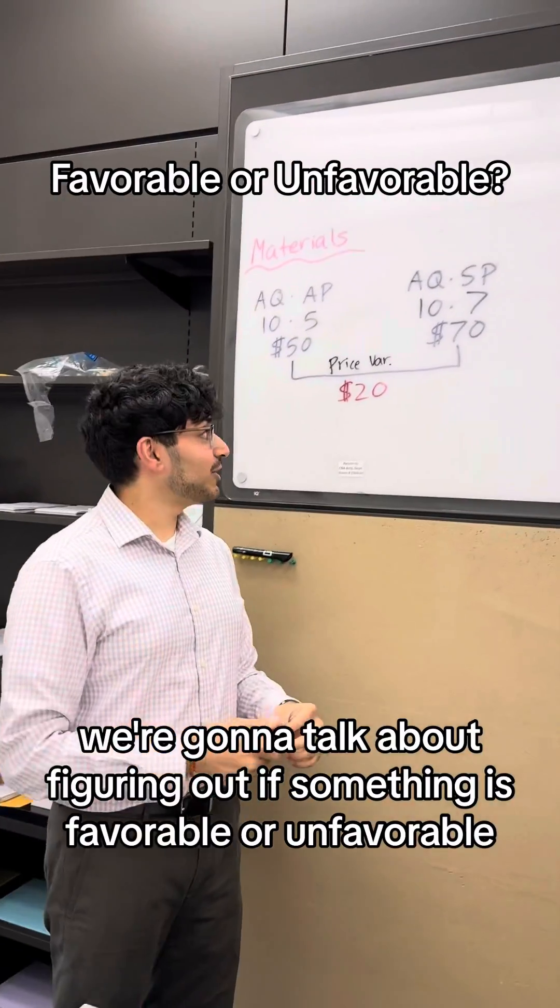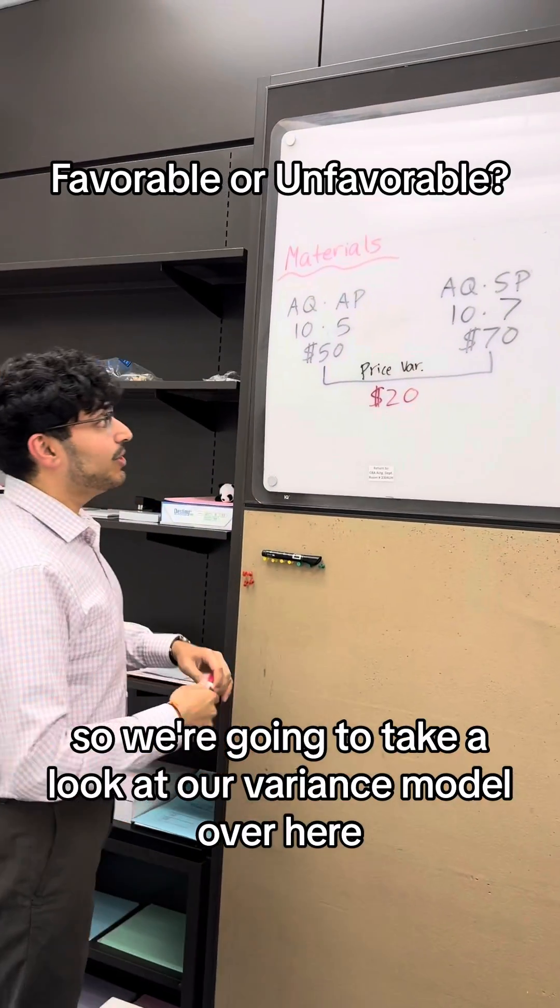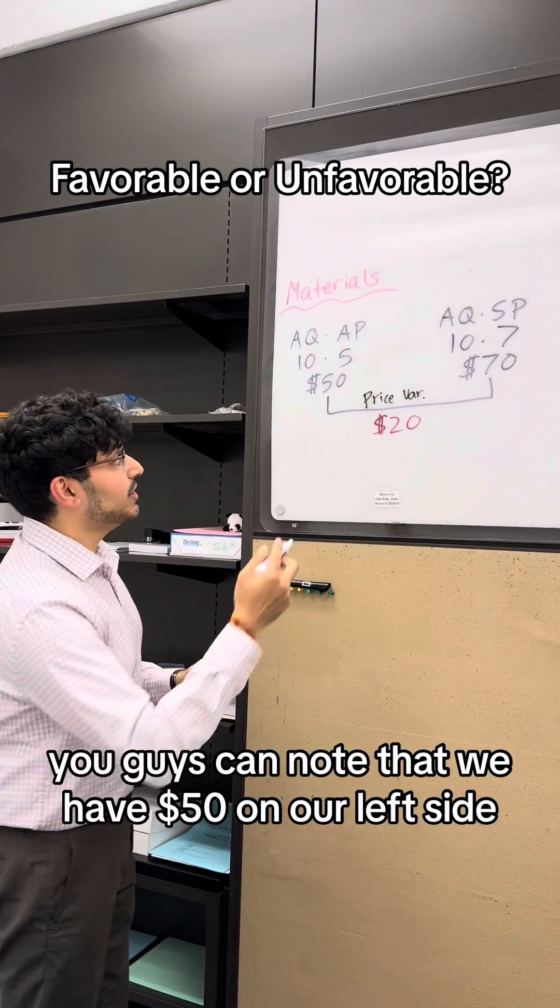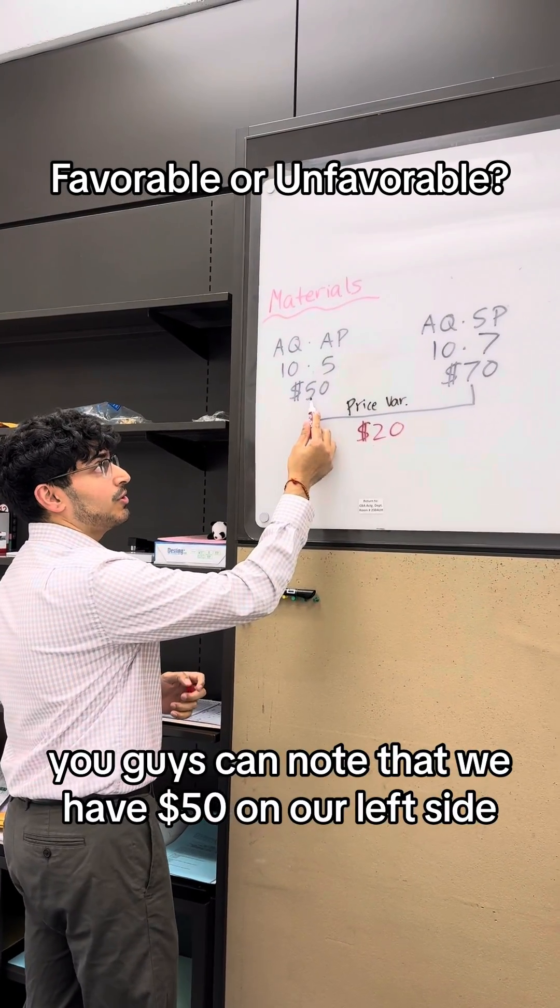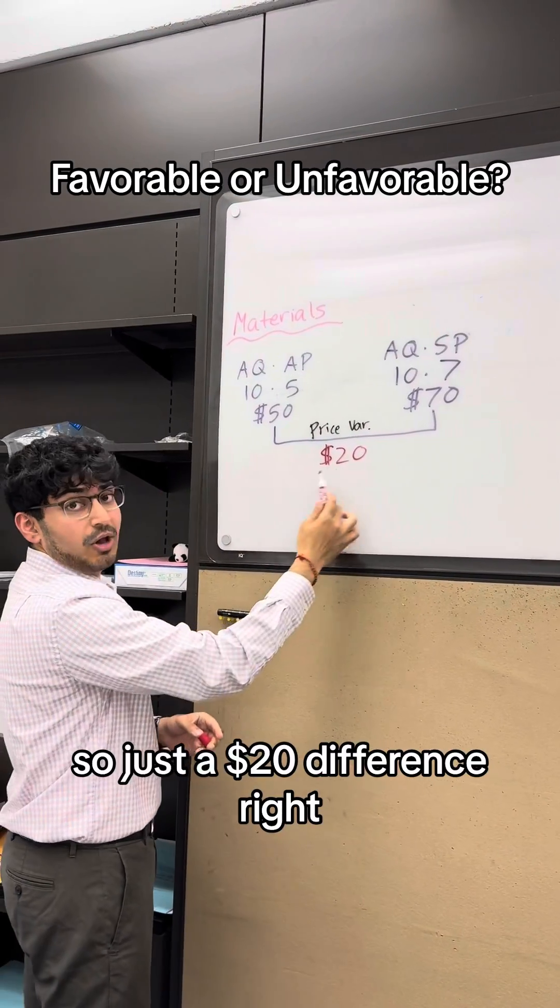So today we're going to talk about figuring out if something is favorable or unfavorable. So we're going to take a look at our variance model over here. You guys can note that we have $50 on our left side and $70 on our right side. So just a $20 difference, right?